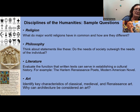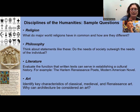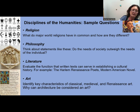The following are some disciplines of the humanities. In religion, we might think about what world religions have in common and how they are different. In philosophy, we consider questions like: how do the needs of society outweigh the needs of the individual? In literature, we evaluate the function that written texts serve in establishing a cultural history — for example, the Harlem Renaissance poets or the modern American novel. In art, we identify key characteristics of classical, medieval, and Renaissance art, and ask questions such as why can architecture be considered an art, and what is art?